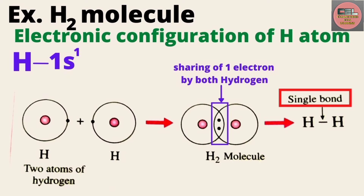Let's look at an example: the H₂ molecule. In the case of the H₂ molecule, the electronic configuration of hydrogen atom is 1s¹. In this case, hydrogen is unstable, so it needs one more electron to achieve stability.